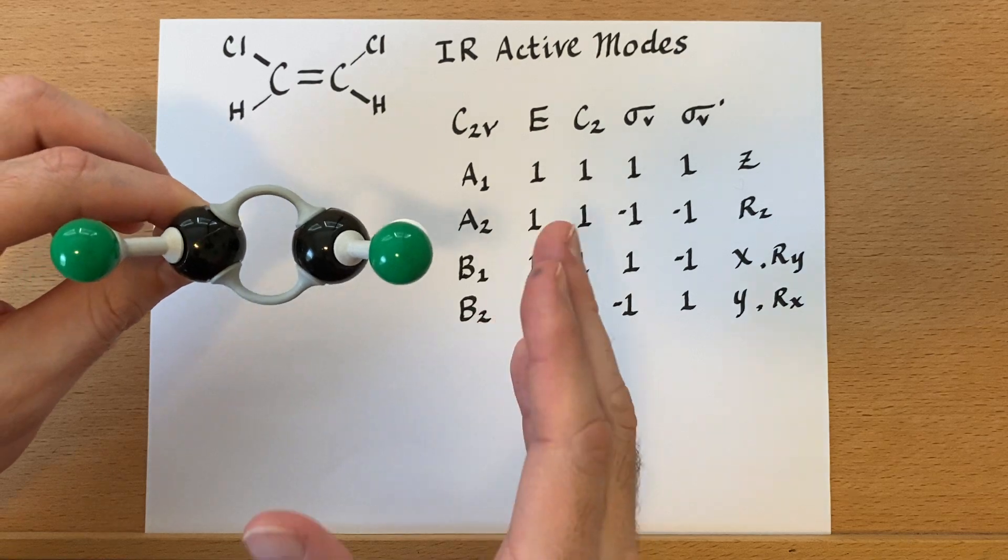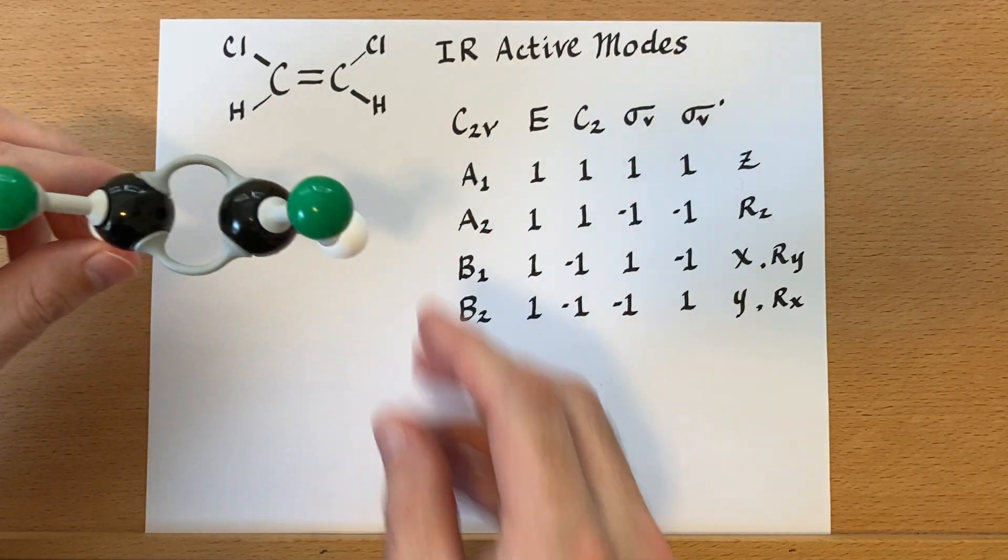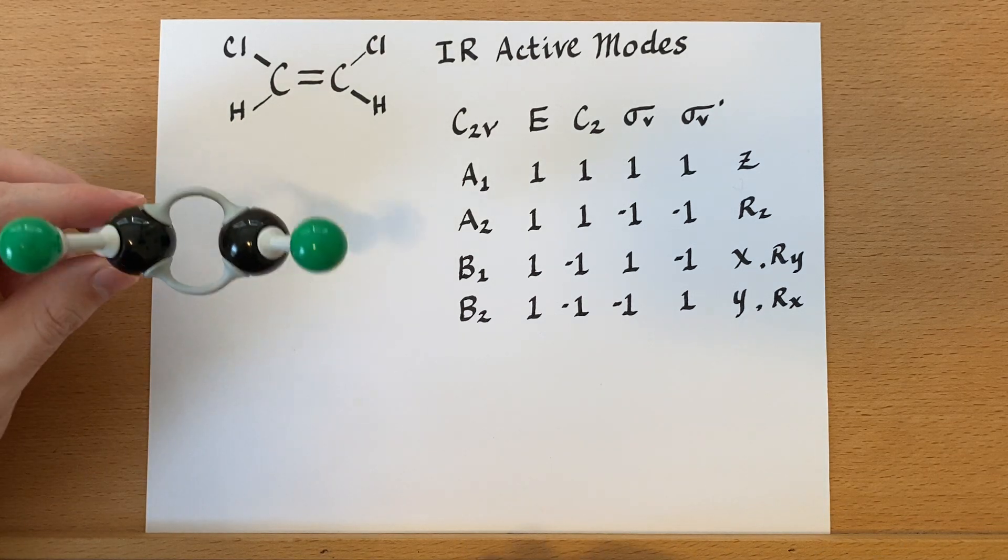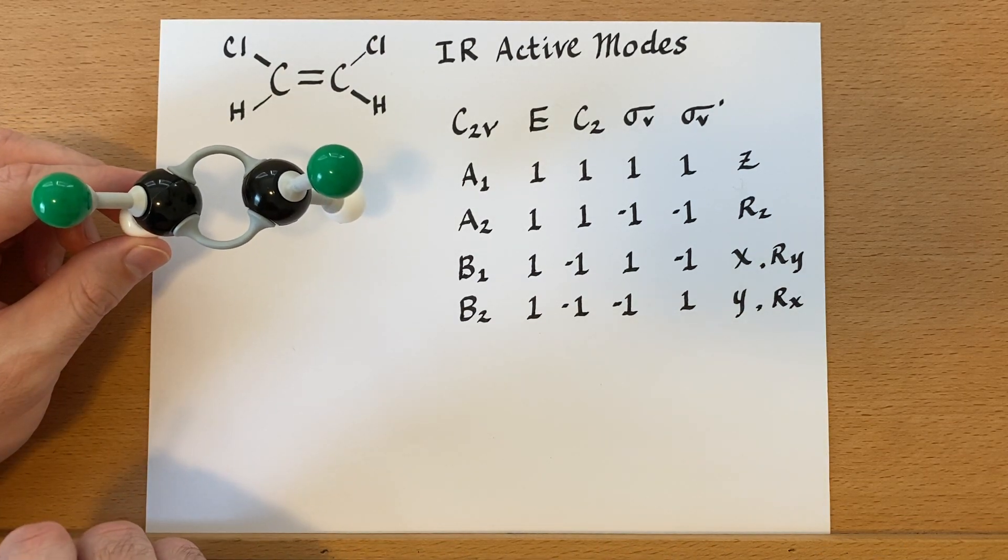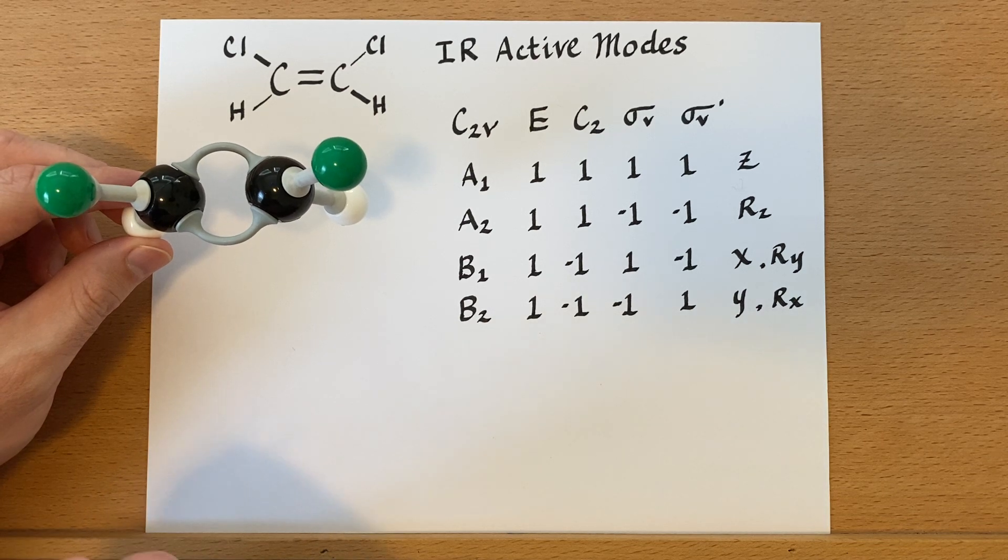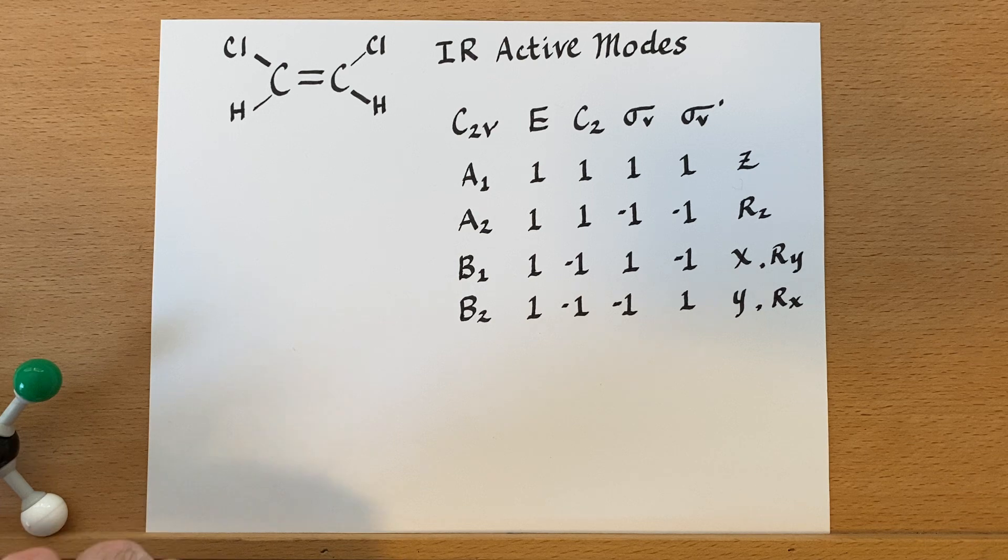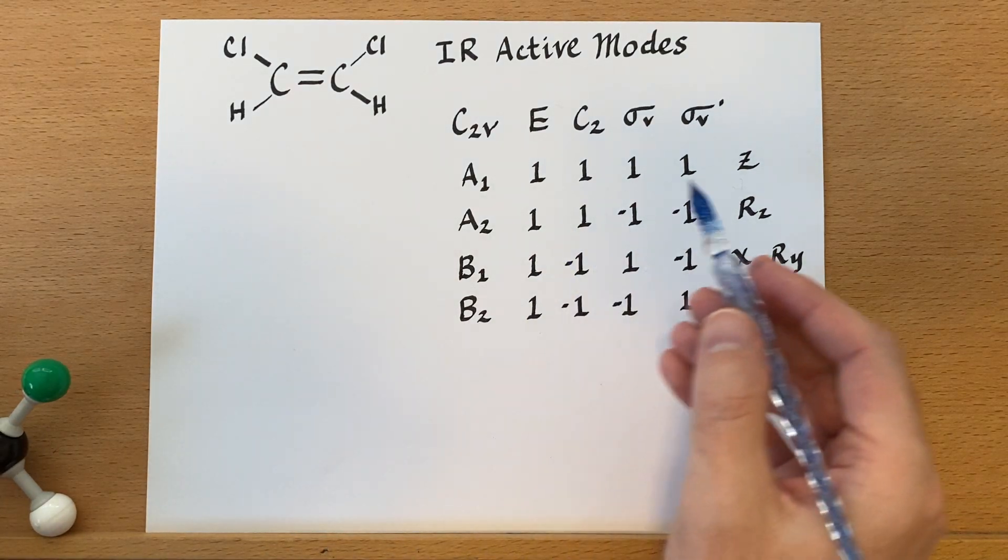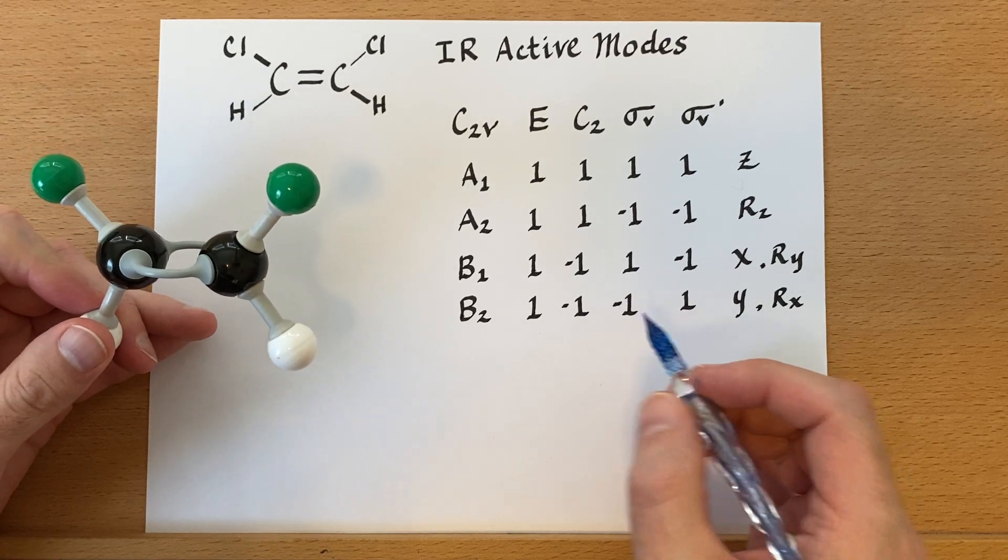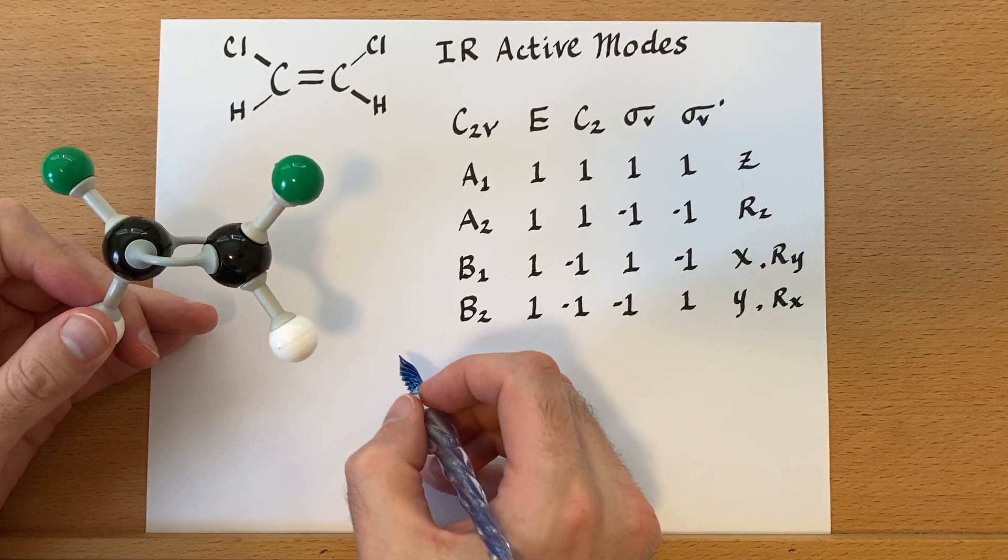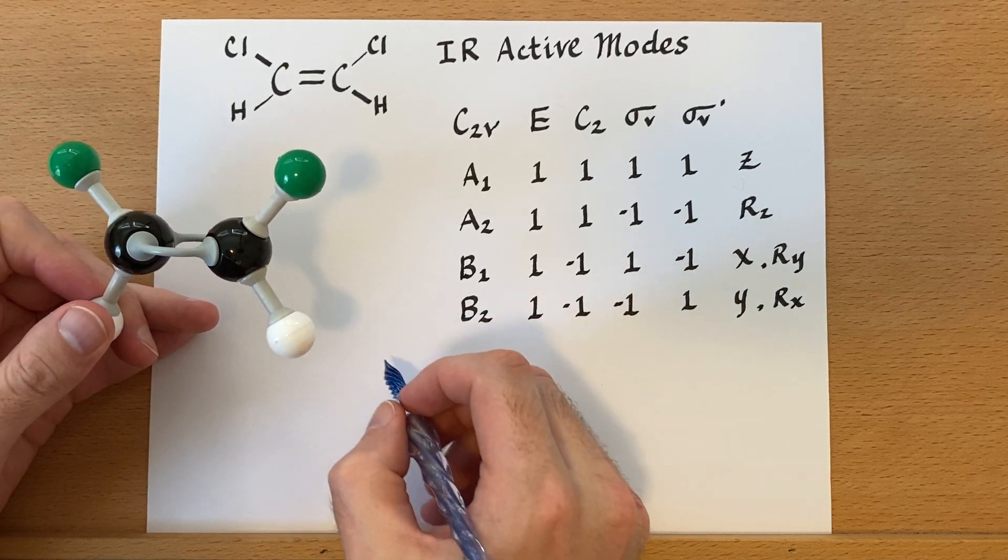So that is the point group. This has the same symmetry as water, actually. So now let's look at determining the number of IR active modes for this particular molecule. So I've got the character table here, and let's go about counting up the number of atoms that stay in the same position for each operation.